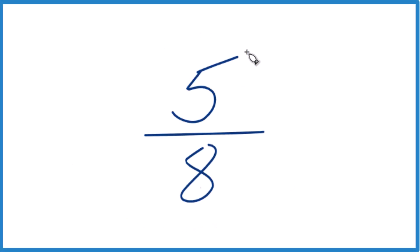All right, let's take the fraction 5 eighths, and we're going to write this as a decimal. We're going to round it to the thousandths place, the hundredths place, and the tenths place.